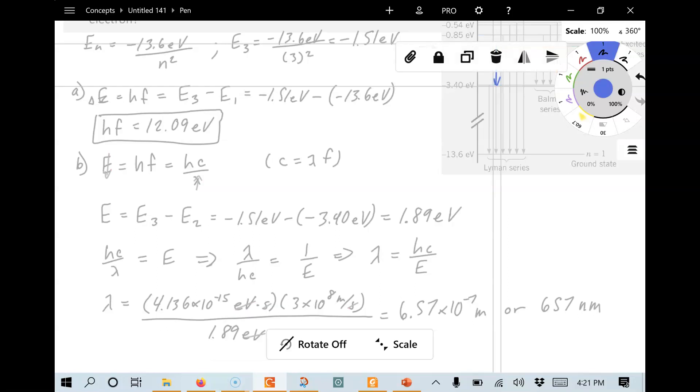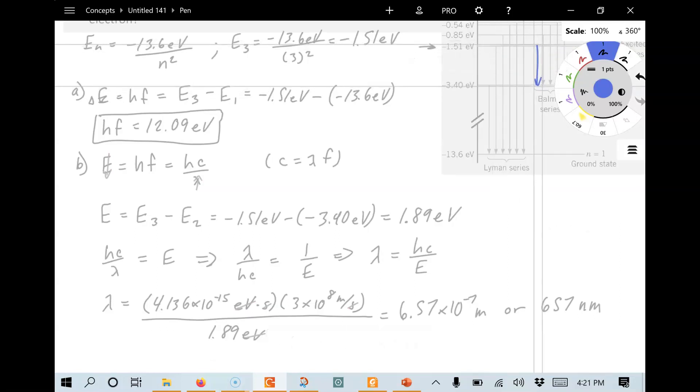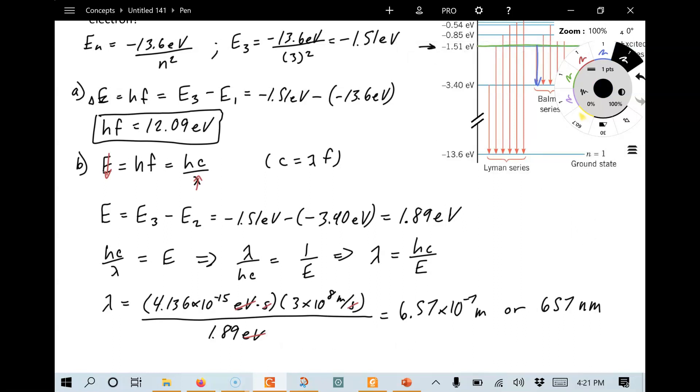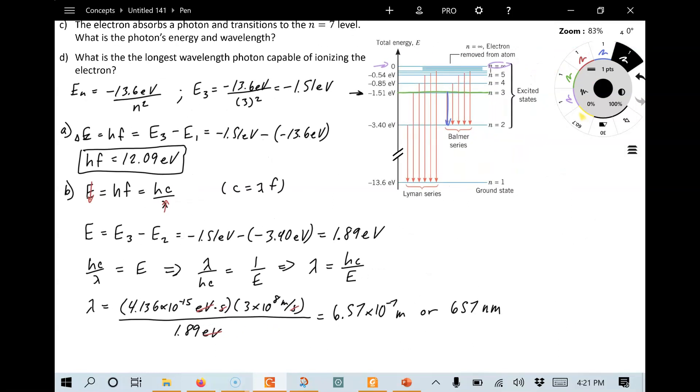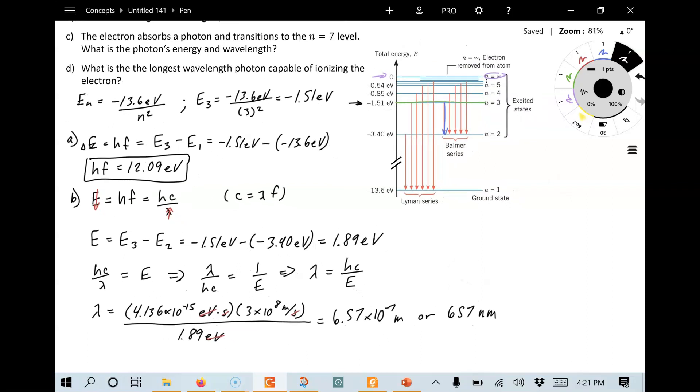Now I realize I put that transition in the wrong spot. It's actually this one right here. It's from n equals 3 to 2. And it's that first, shortest energy transition in the Balmer series there. Let's keep going here.